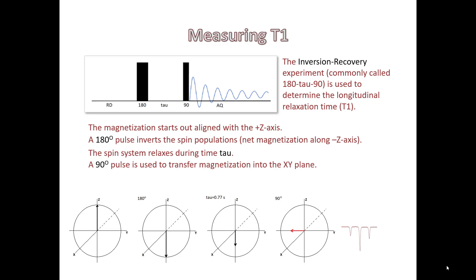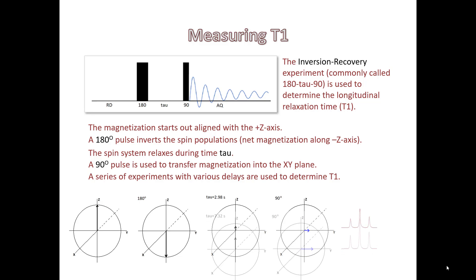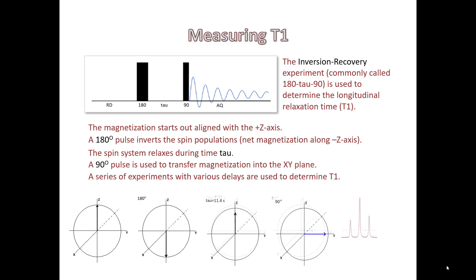We run the experiment again. This time we'll wait a little bit longer. Our magnetization has gotten smaller. We pulse it into the xy plane. We're getting smaller and smaller signal. We keep doing this several times. Here we've got a positive peak. We run it again. We run it again. And we keep doing this until the last couple experiments are fully relaxed experiments, similar to if we had just run a 1D experiment.